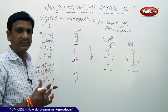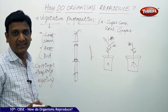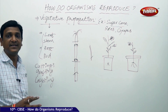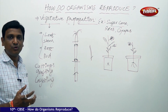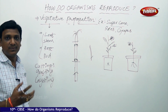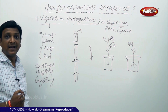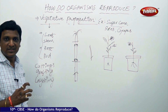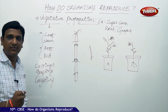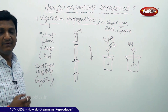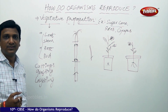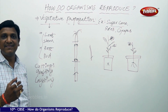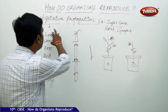From these vegetative parts, we can get new plants with identical characters. This is the advantage of vegetative propagation, which is widely used in plantations — fruit plantations, vegetable cultivation, and floriculture, the culture of flowers. Flowers have great commercial importance for decorations and various purposes. Such plants are propagated quickly in nurseries using vegetative propagation methods.